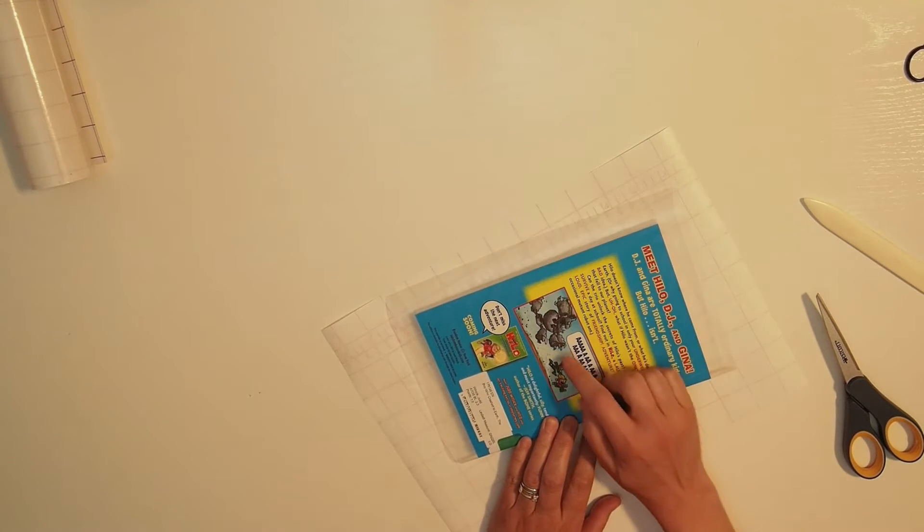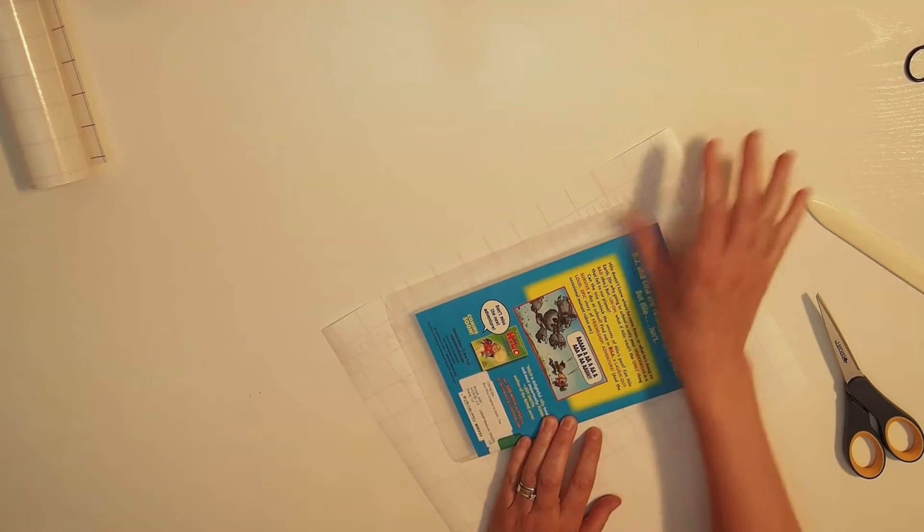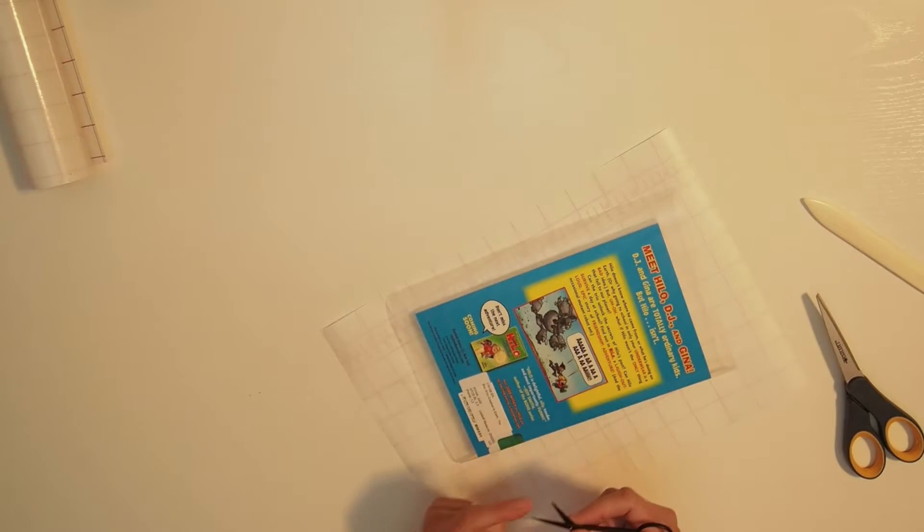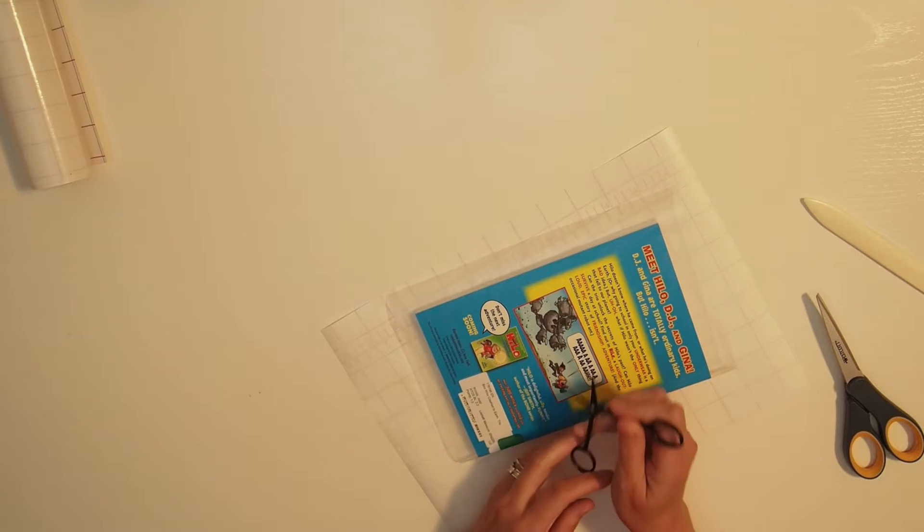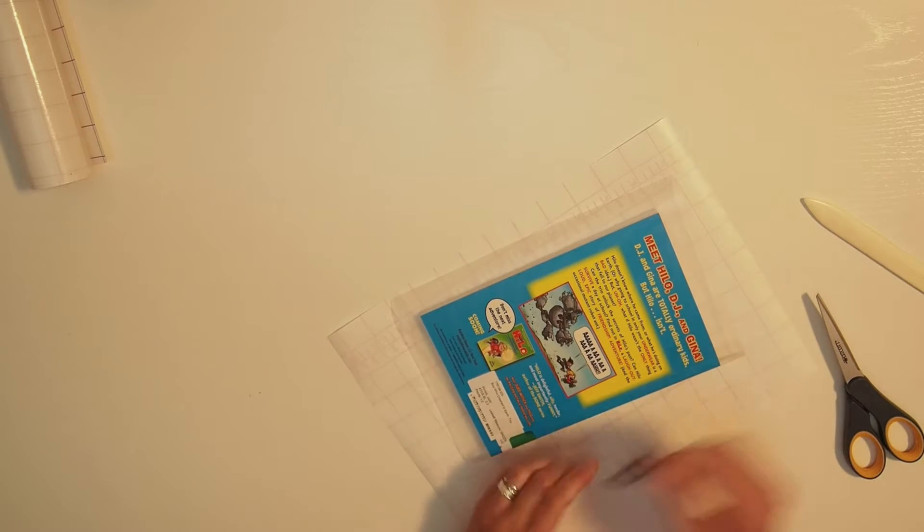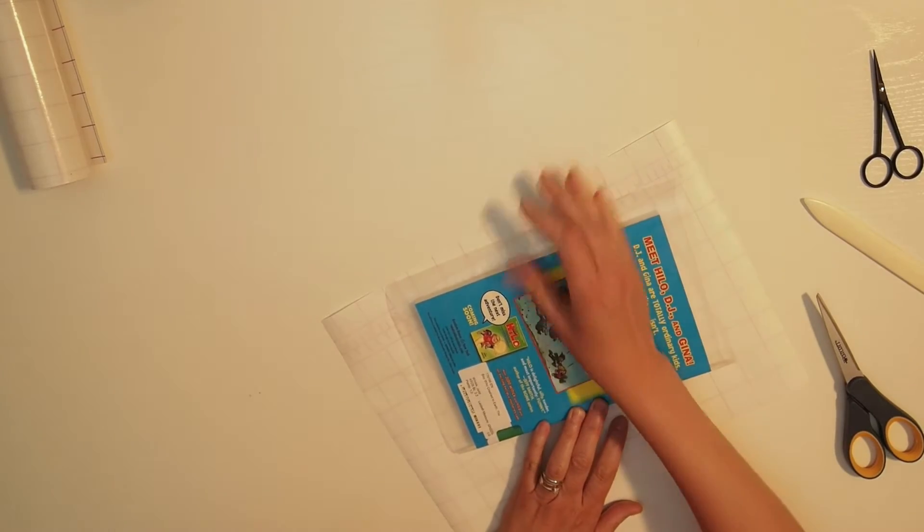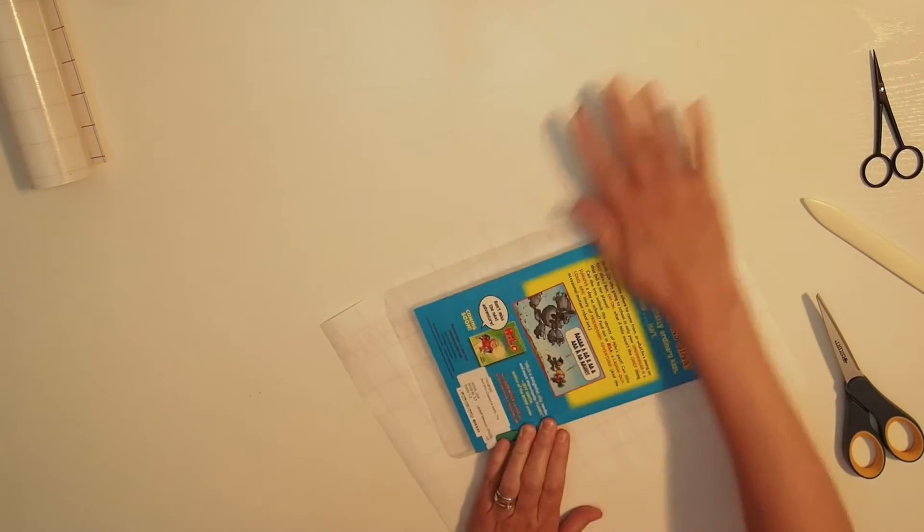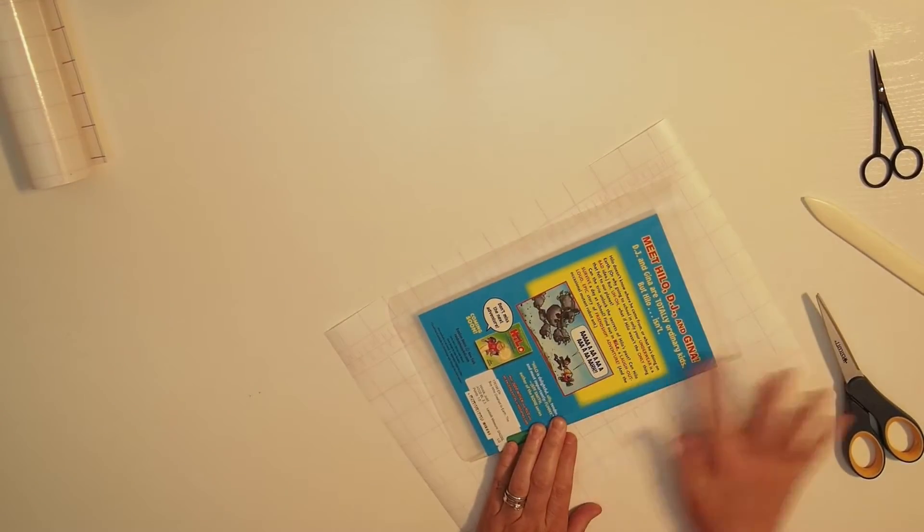If you find that you have a bubble in the middle of your page that you just can't work out, you can take a pin or a really sharp point on your scissors and poke a hole right in it to work the air out. That's the last resort option. Try and get the bubbles out first. Okay, so then we're going to repeat the process with the corners.